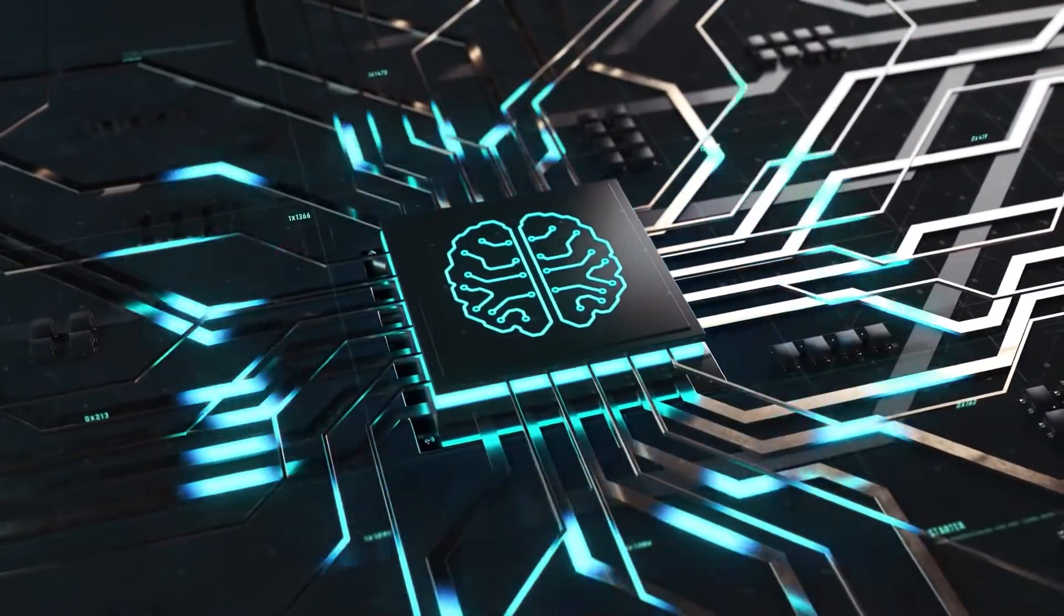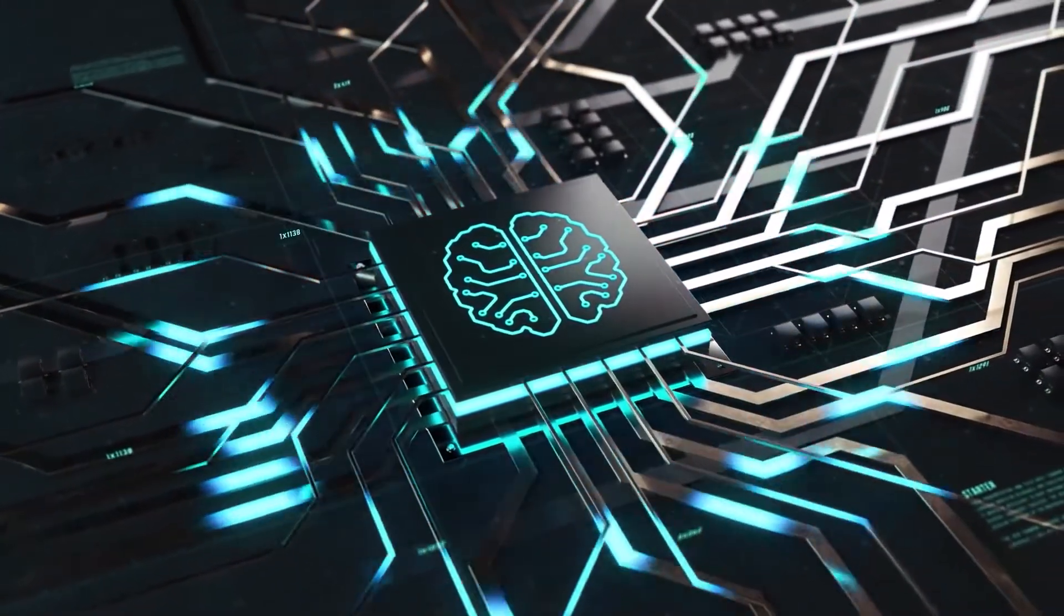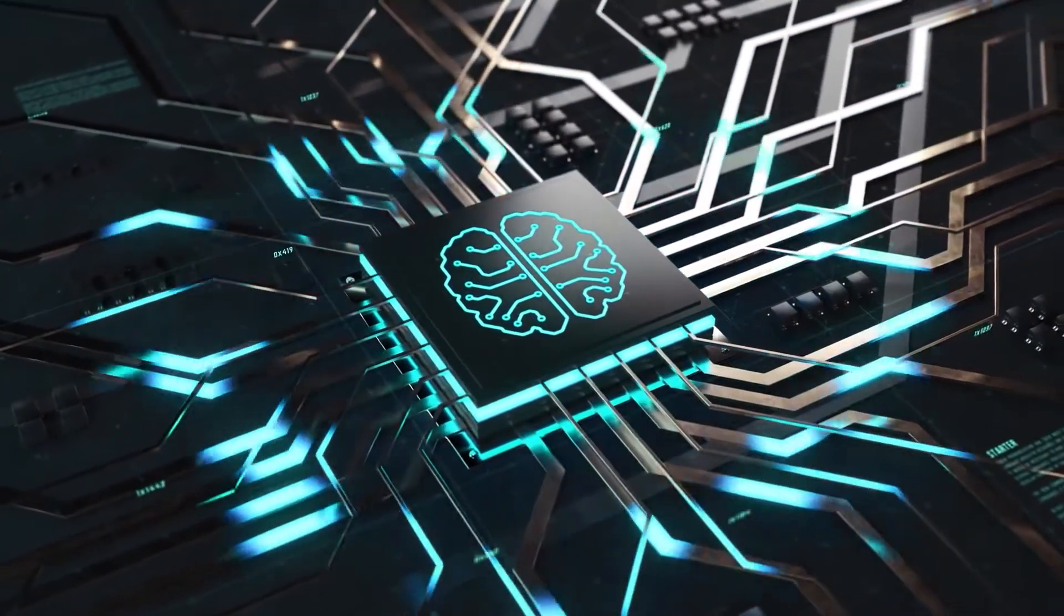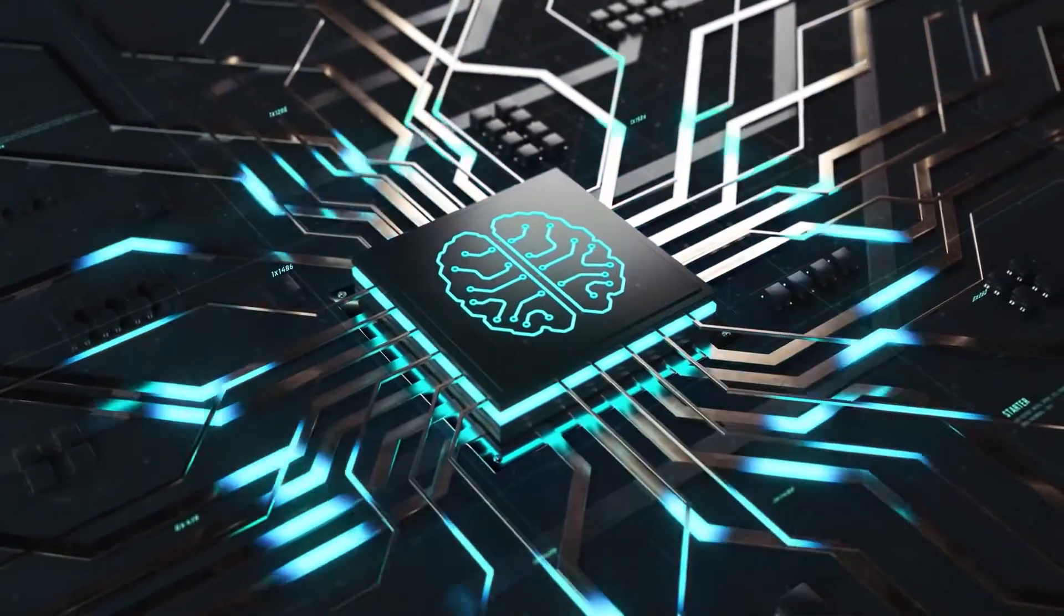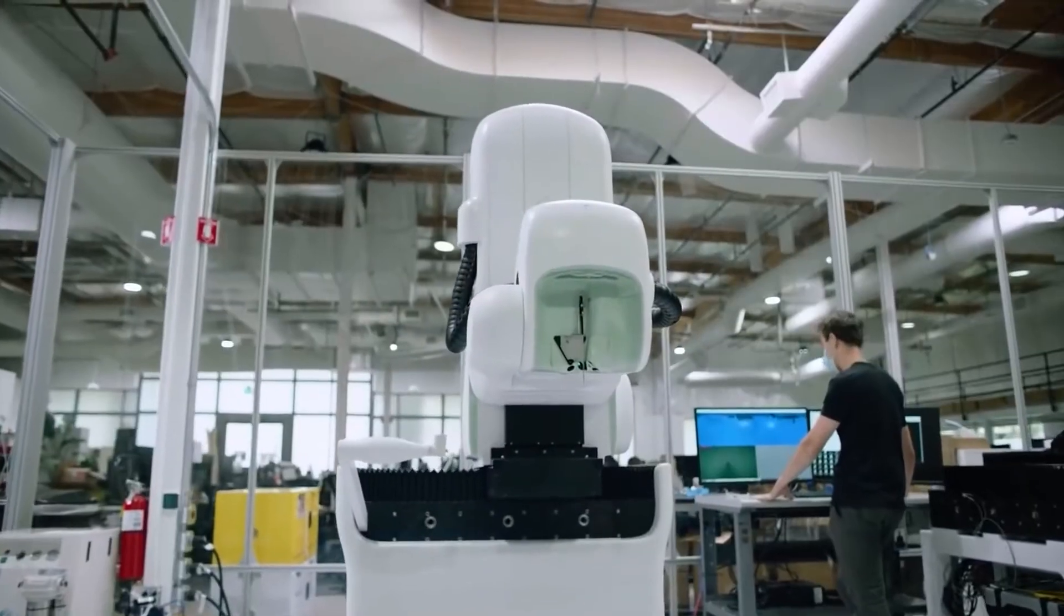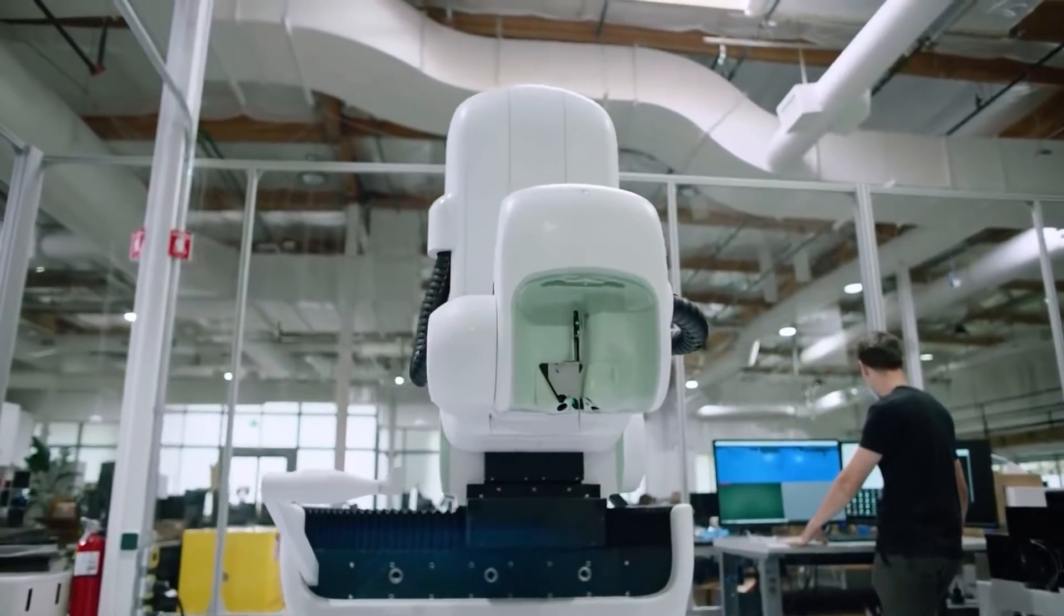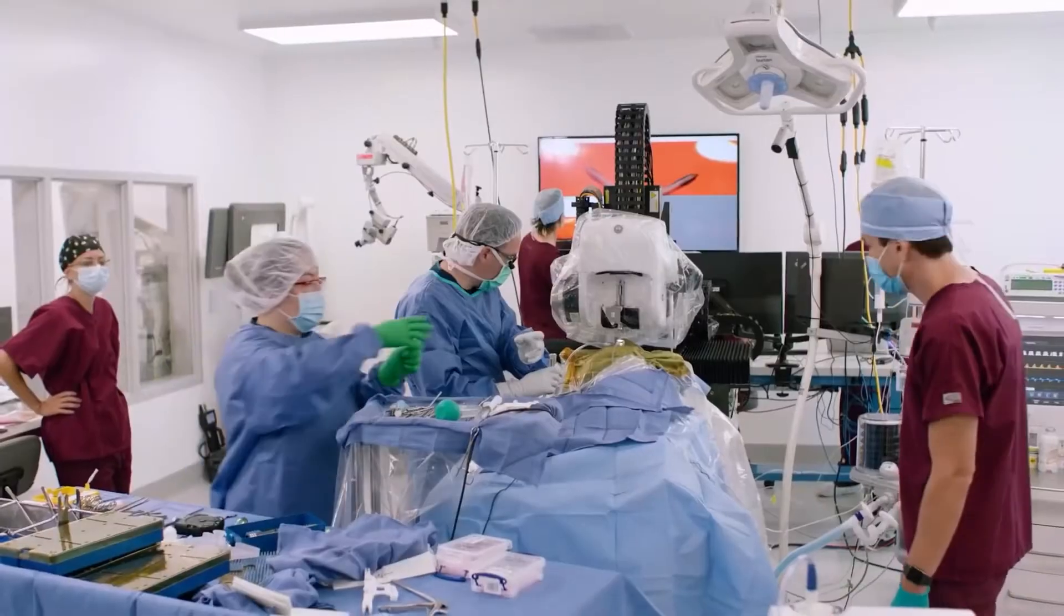This is the point where the Neuralink chip will work. The electrodes of Neuralink will read these electrical signals produced by neurons. These signals will be outputted in the form of movement or action. At this point, we must appreciate this technology as it will bless the lives of people suffering from brain injuries or diseases.